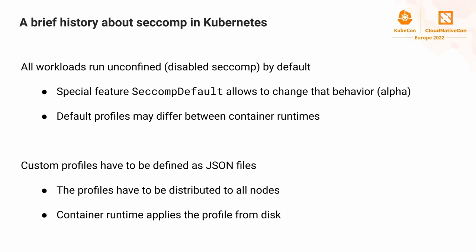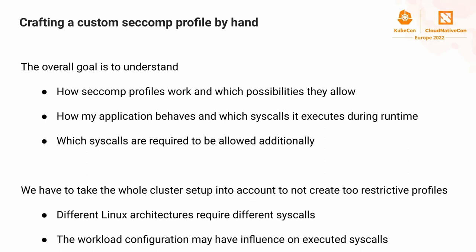Custom profiles can be defined as JSON files, but there are two main issues: they have to be distributed to all nodes to be available cluster-wide, and container runtimes have to apply them from disk. There's no automated way in Kubernetes to distribute those profiles to each node and load them.